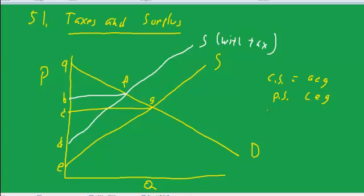The New Consumer Surplus, I'll call Prime, that's after the tax, is going to be A, B, F, because there's a lower quantity that's traded in the market, and then it's at a higher price.